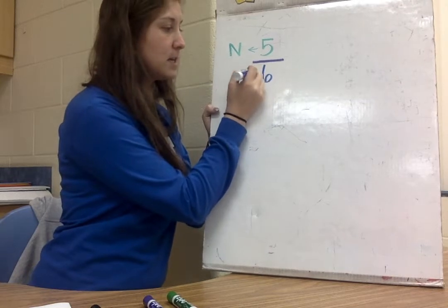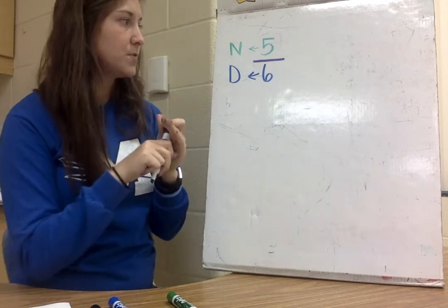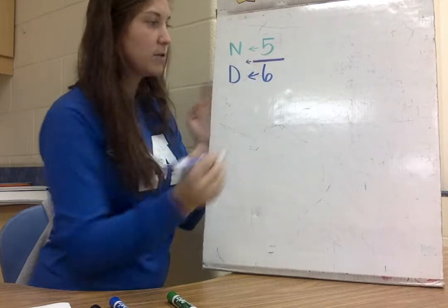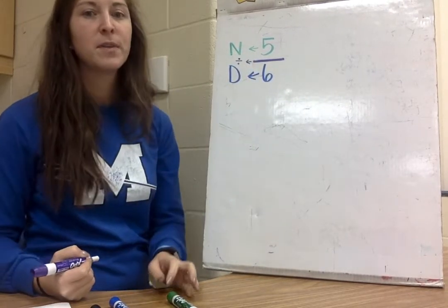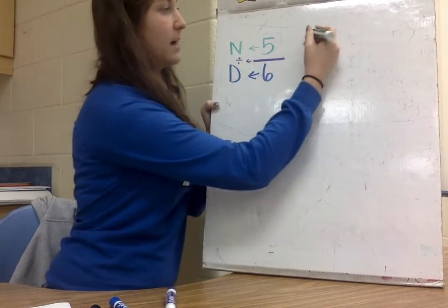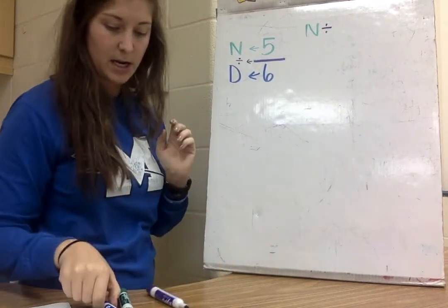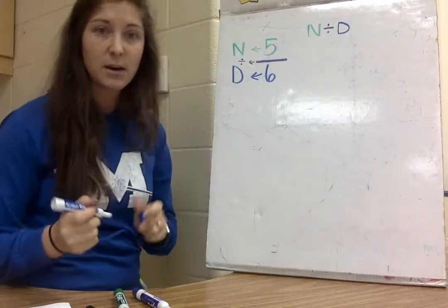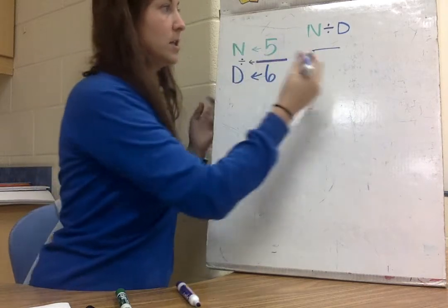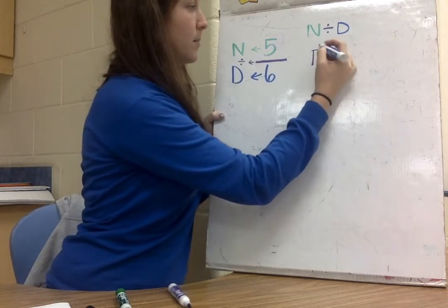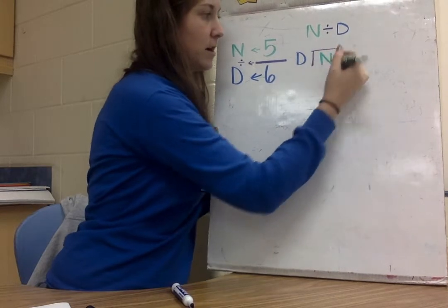The 6 I'm going to label with a D, because the 6 is the denominator of our fraction. The fraction bar is the same thing as a division sign. We can also write this as N divided by D, and that's how we represent it as a division problem. We can also represent it inside of our division house, with the denominator on the outside and the numerator on the inside.